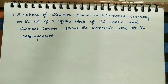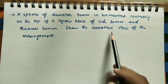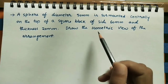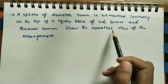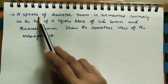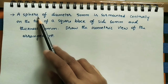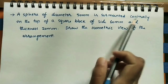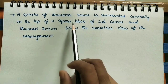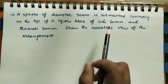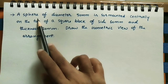Hi friends, welcome to my channel. In today's class we will discuss how to do the isometric view of the given diagram. Isometric view means a three-dimensional diagram of a given sphere — sphere means the circular one — which is mounted centrally on the top square block. Here we need to do the combined diagram of the square block and sphere.